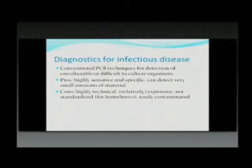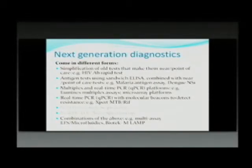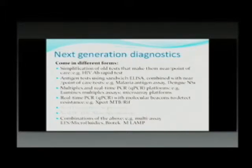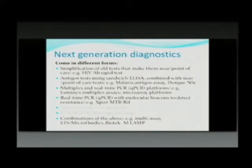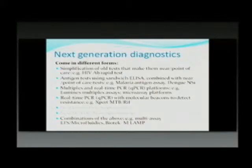There are a lot of next-generation diagnostics. For our purposes, we will focus on about five of them. We want to think about simplification of old tests, which are really the antibody tests — for instance, the HIV antibody rapid test, which is now point of care — also antigen tests like sandwich ELISAs, which we're now using for malaria. Multiplex real-time PCR or quantitative PCR, such as Luminex multiplex assays and microbead platforms. Also GeneXpert, which is real-time PCR with molecular beacons to detect resistance. Because of time constraints, we're not going to talk about next-generation sequencing at this time, but that is a very exciting area of molecular biology where we're able to better characterize viral populations.